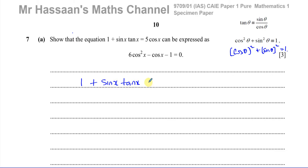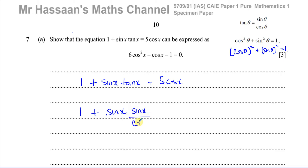I'm going to apply these two identities to change the equation 1 plus sine x times tan x equals 5 cosine x into the required form. Sometimes you can't see every step from the beginning, so you just take it step by step. The only thing I can do here is replace tan x with sine x over cosine x, giving us 1 plus sine x times (sine x over cosine x) equals 5 cosine x.